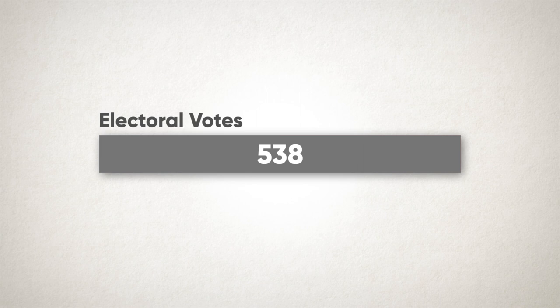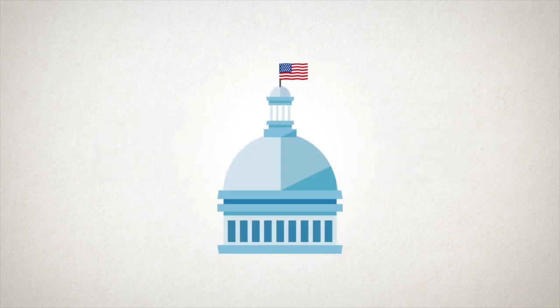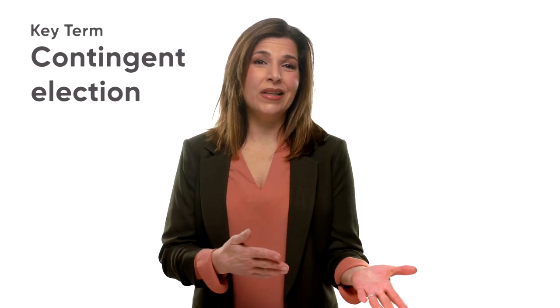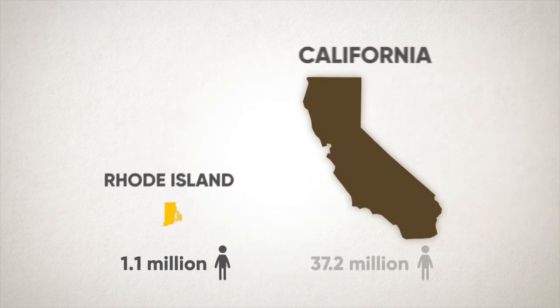On the other hand, some argue that winner-take-all has its merits — after all, it maximizes the support a candidate can get from a state they have the most votes in. A fractional proportional system may also increase the chances of no candidate reaching the 270 electoral votes needed to win the presidency, if a strong third-party candidate emerged. If no candidate reaches a majority of electoral votes, the Constitution requires that the House of Representatives pick the next president in a contingent election, where each state gets only one vote — moving us even further from the idea of one person, one vote, since a smaller state like Rhode Island would have the same one vote as a large state like California.